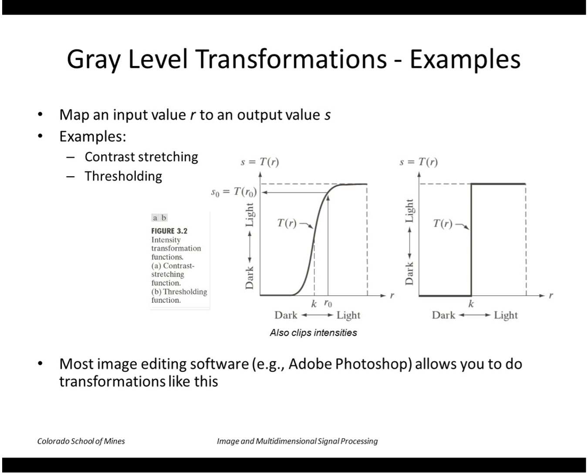In general, we want to map an input value r to an output value s in an image. Here are two examples: contrast stretching, where we have an input scale from zero to some maximum along this r scale, dark to light, and we want to map that to some output range s. This shows that low values of r are mapped to zero of s, high values of r are mapped to the maximum value here.